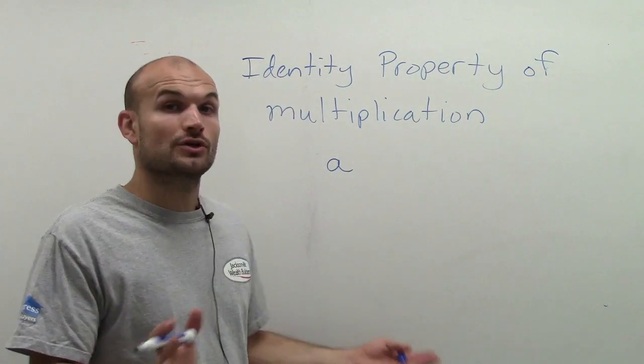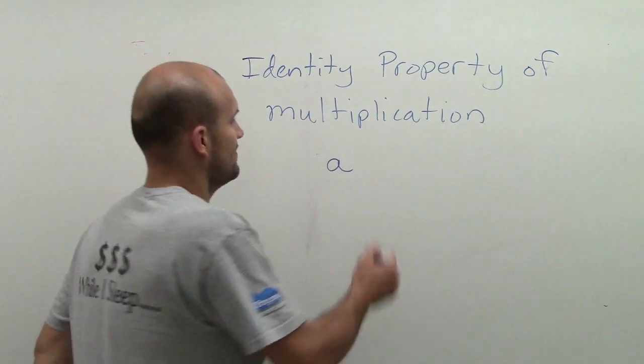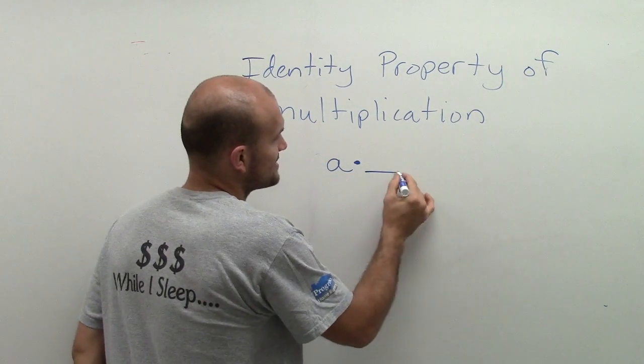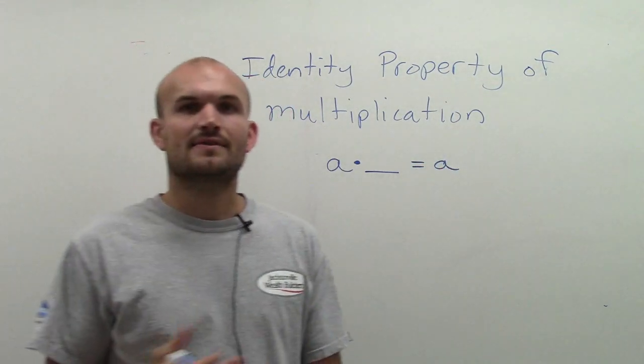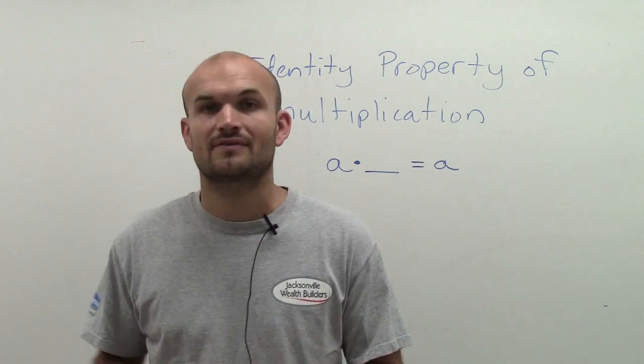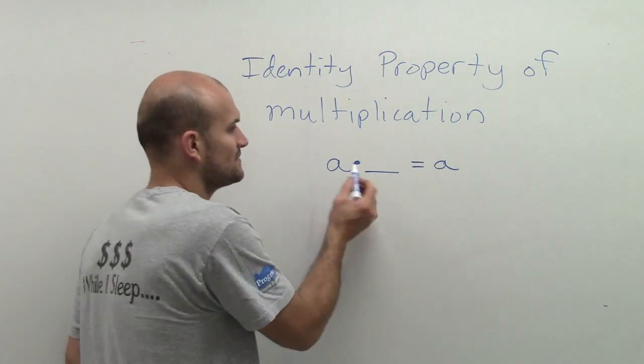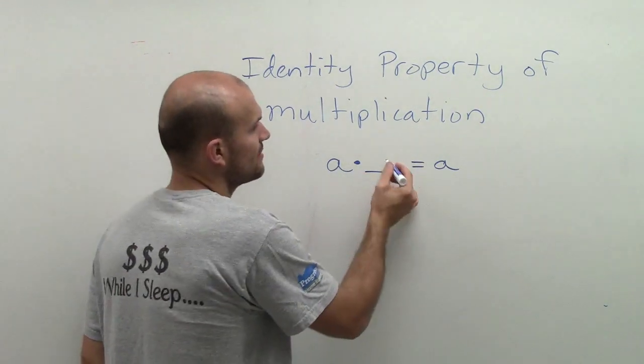Any real number that we're going to be talking about. The identity property of multiplication states that a multiplied by some number needs to get back to a. So we need to think of all the numbers that we've talked about, that we looked at on the number line. What is the number that we can multiply a by to get back to a?